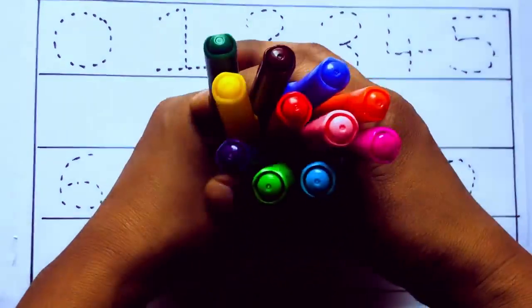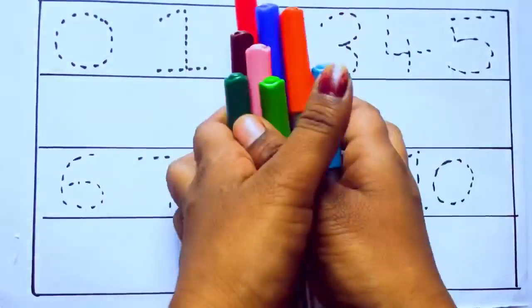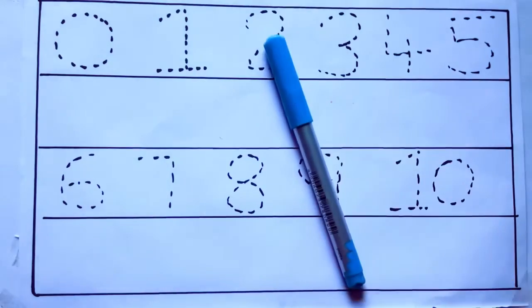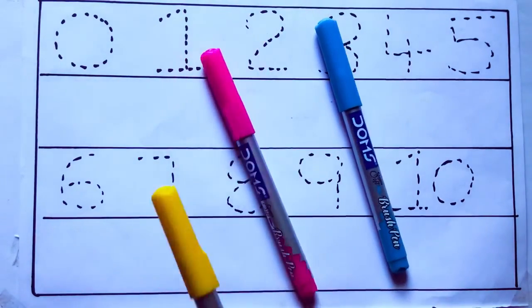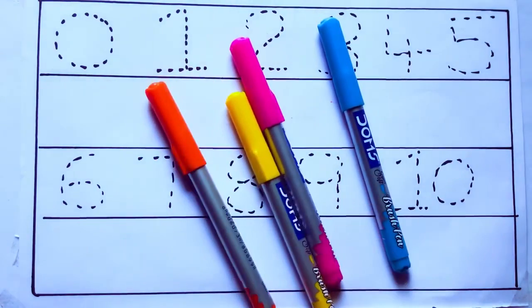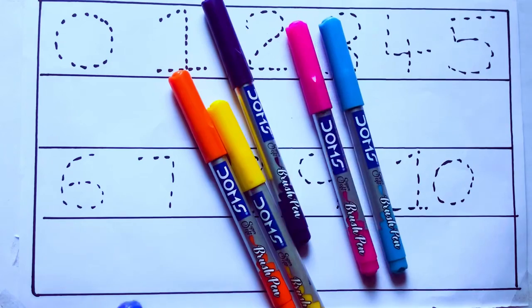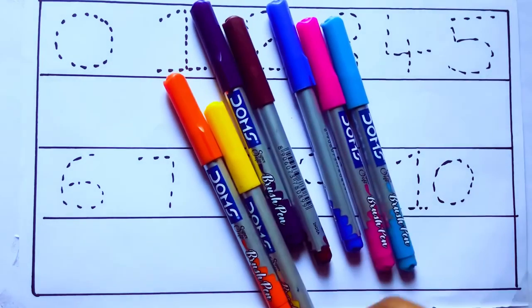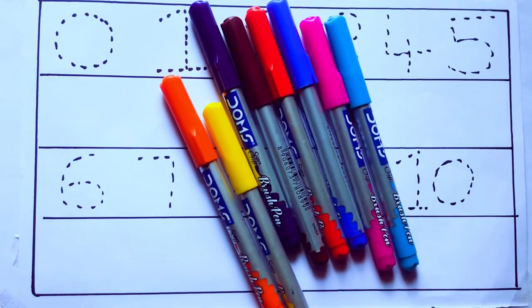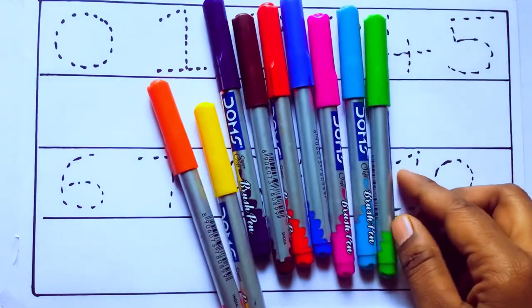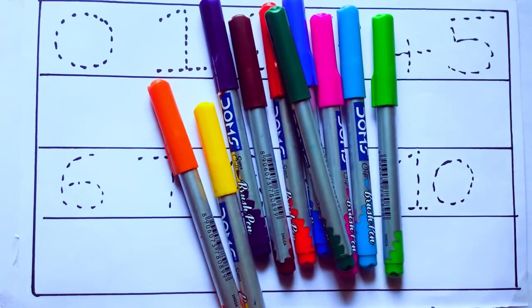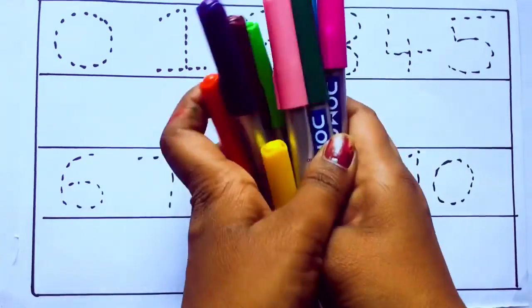Let's learn some colors. These are all the color pencils. Let's learn the names. Sky blue color, pink color, yellow color, orange color, violet color, blue color, brown color, red color, green color, and pink color.